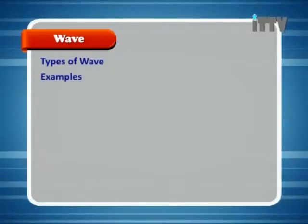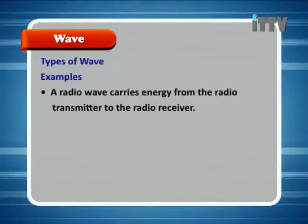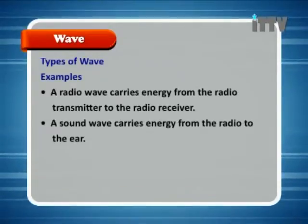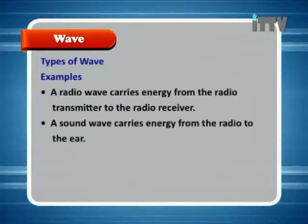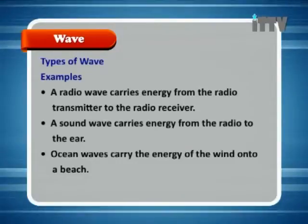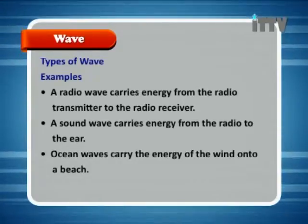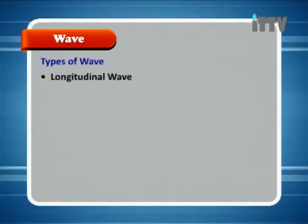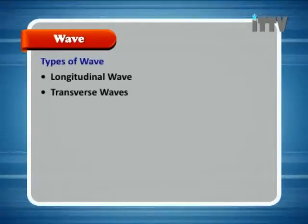Types of wave — examples. A radio wave carries energy from the radio transmitter to the radio receiver. A sound wave carries energy from the radio to the ear. Ocean waves carry the energy of the wind onto a beach. The two types of wave are longitudinal wave and transverse wave.